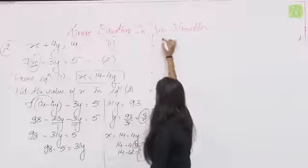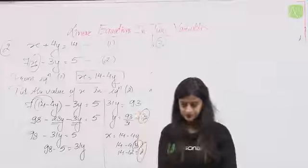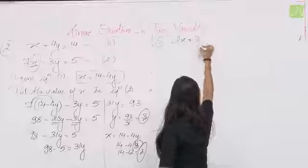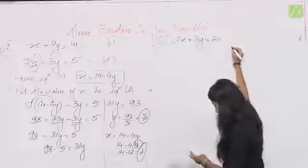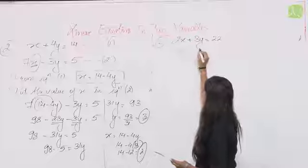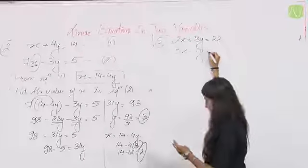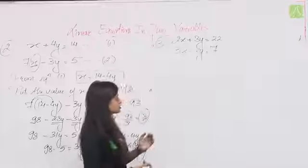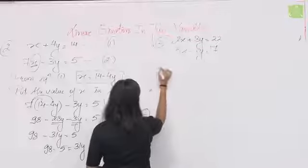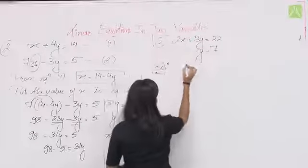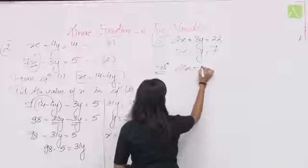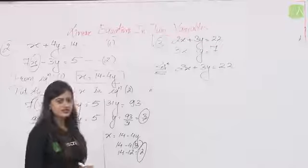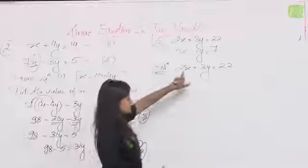Third question: 2x + 3y = 22 and 3x − 2y = 7। Same process से करना है। First equation से x की value निकालो या y की।